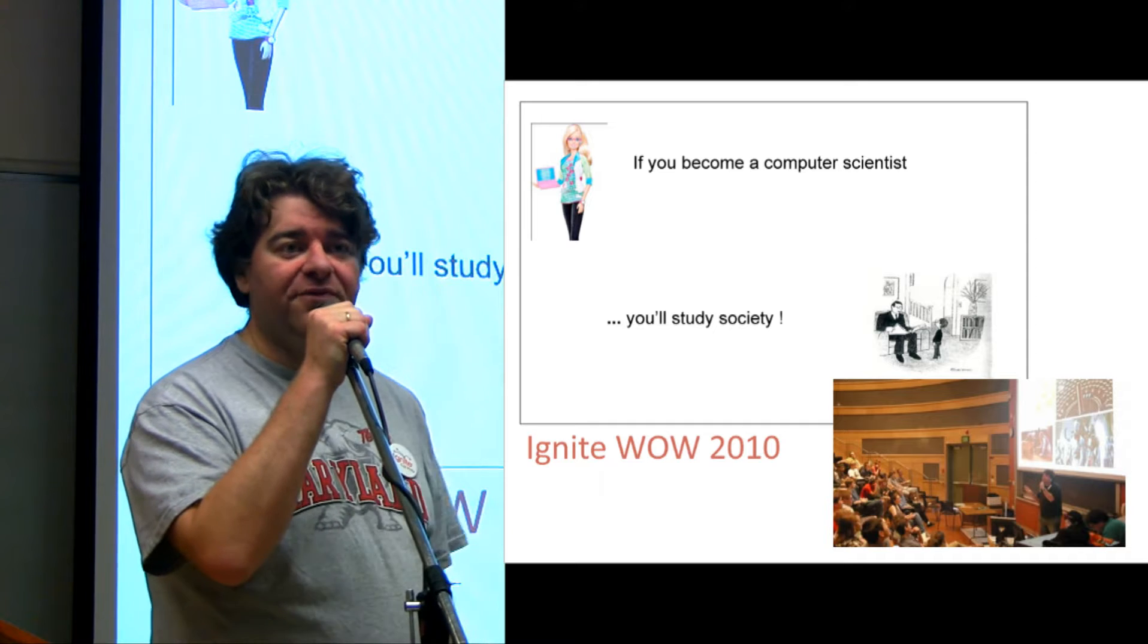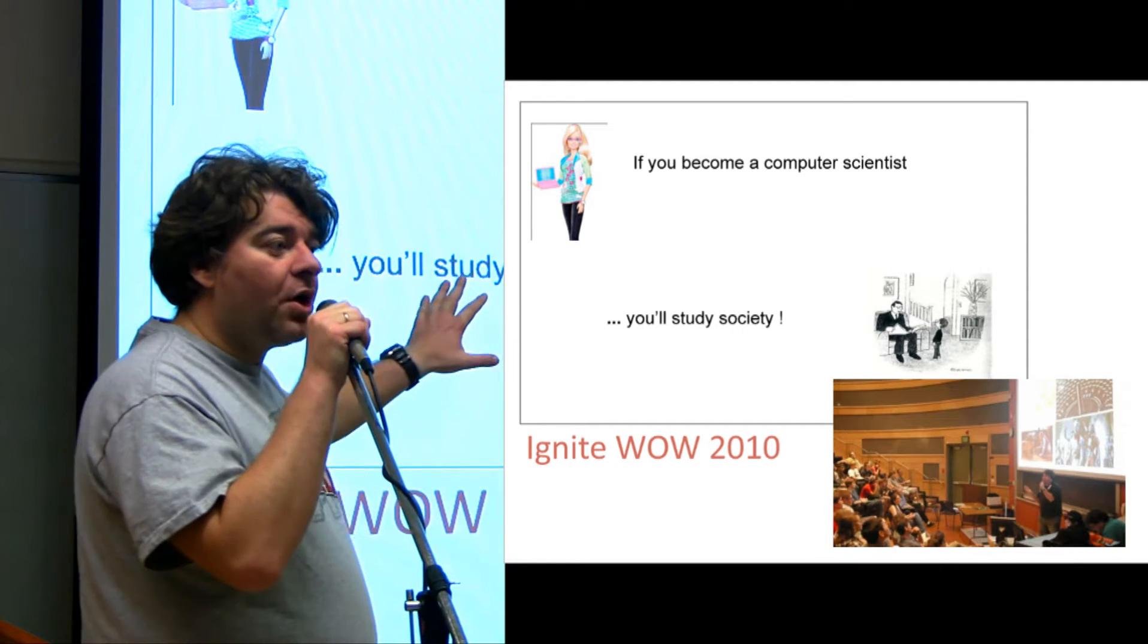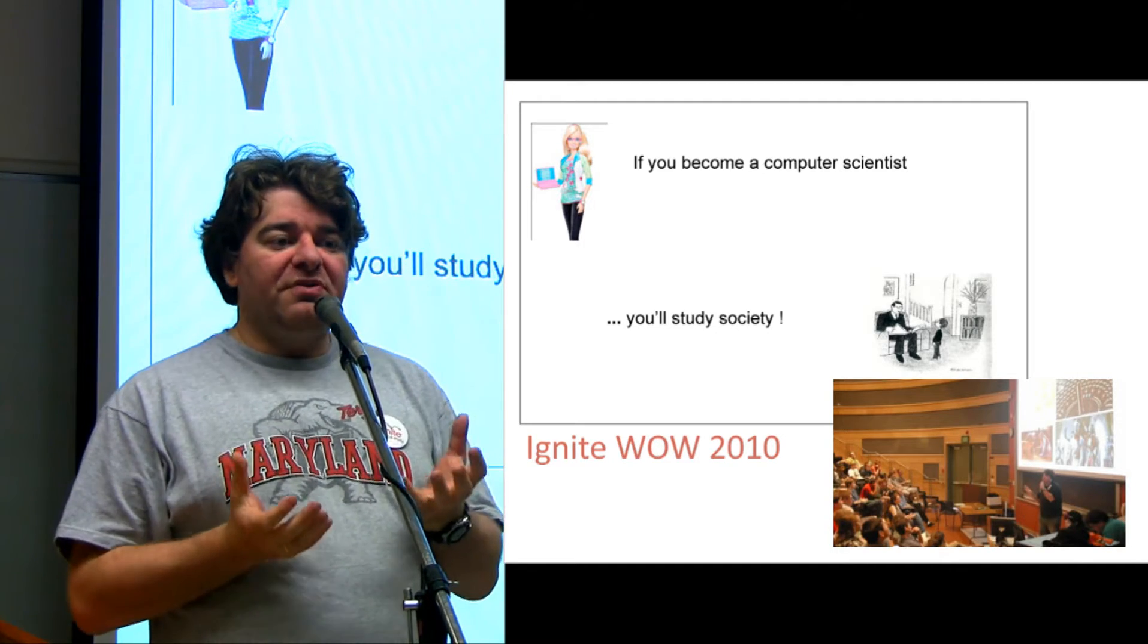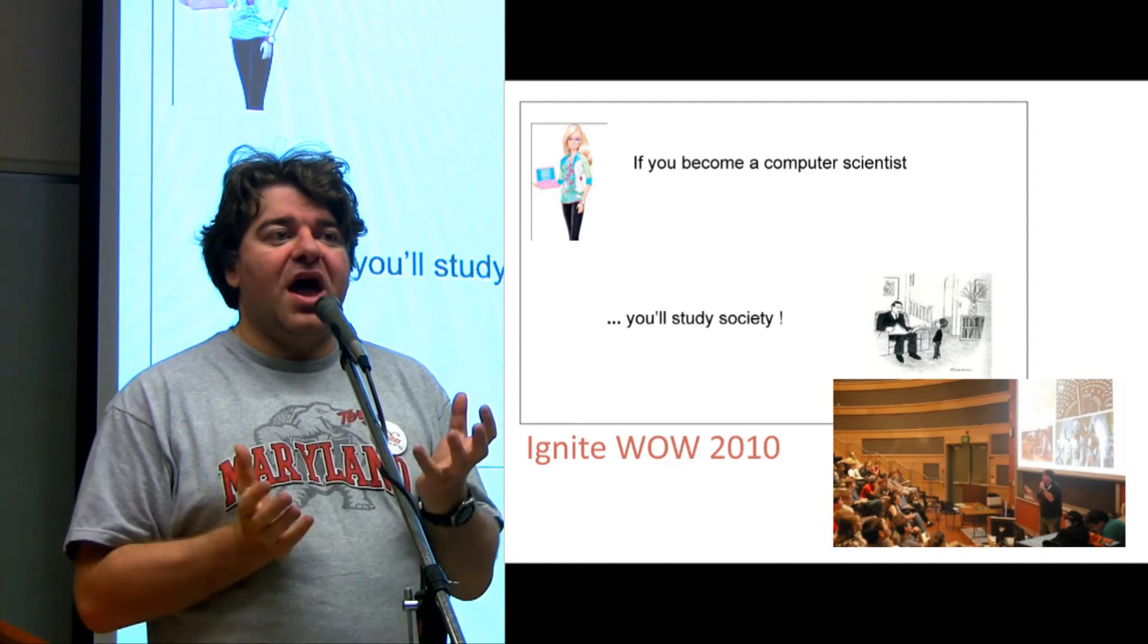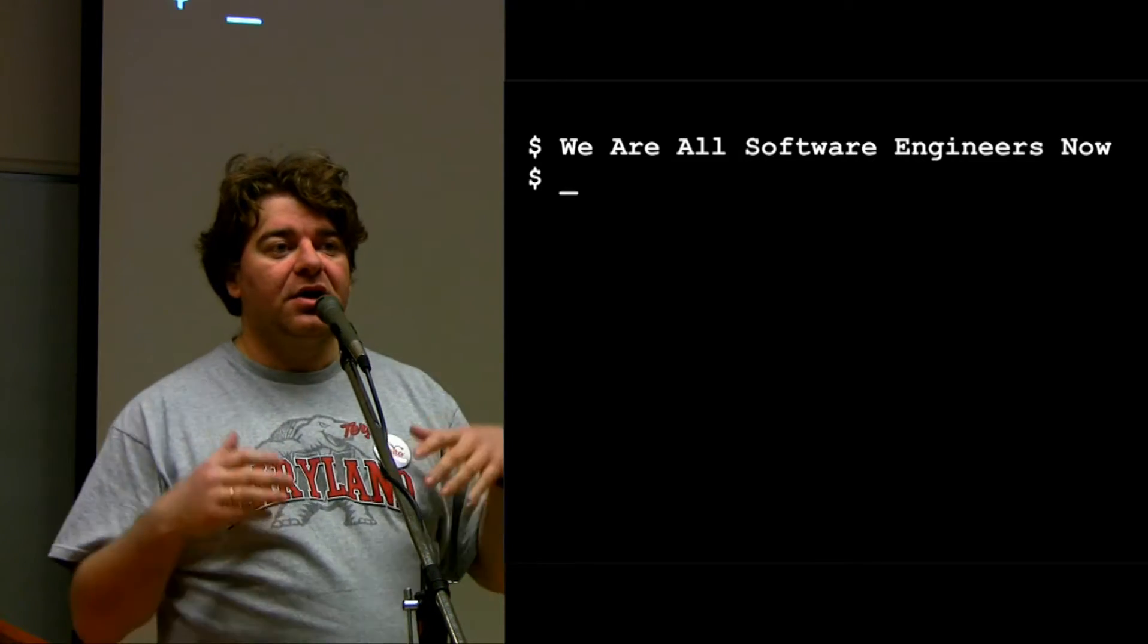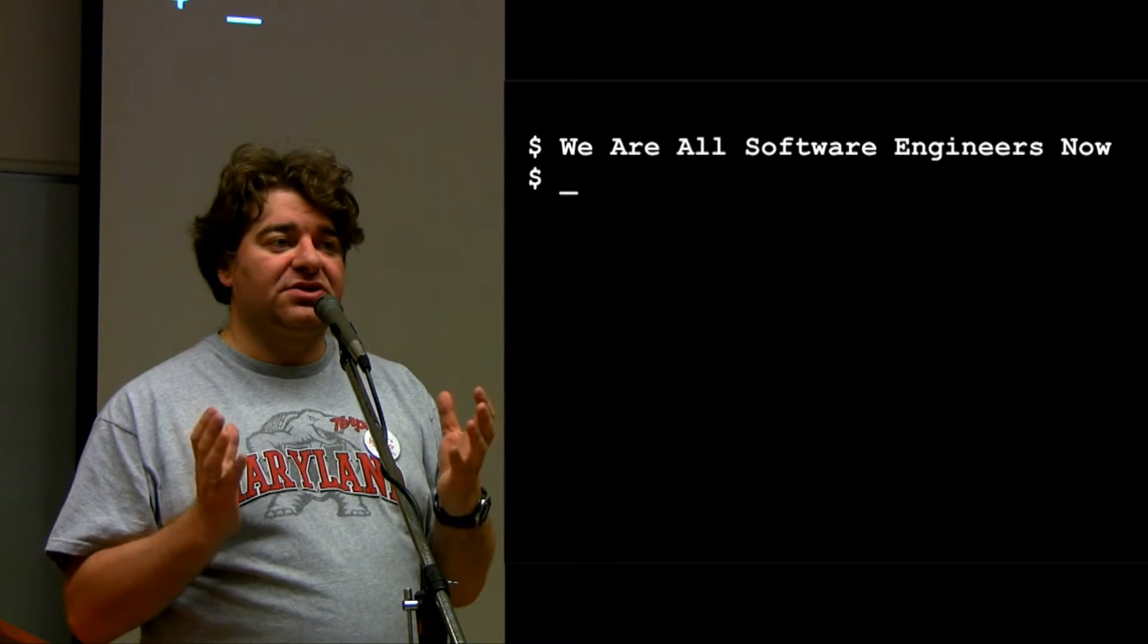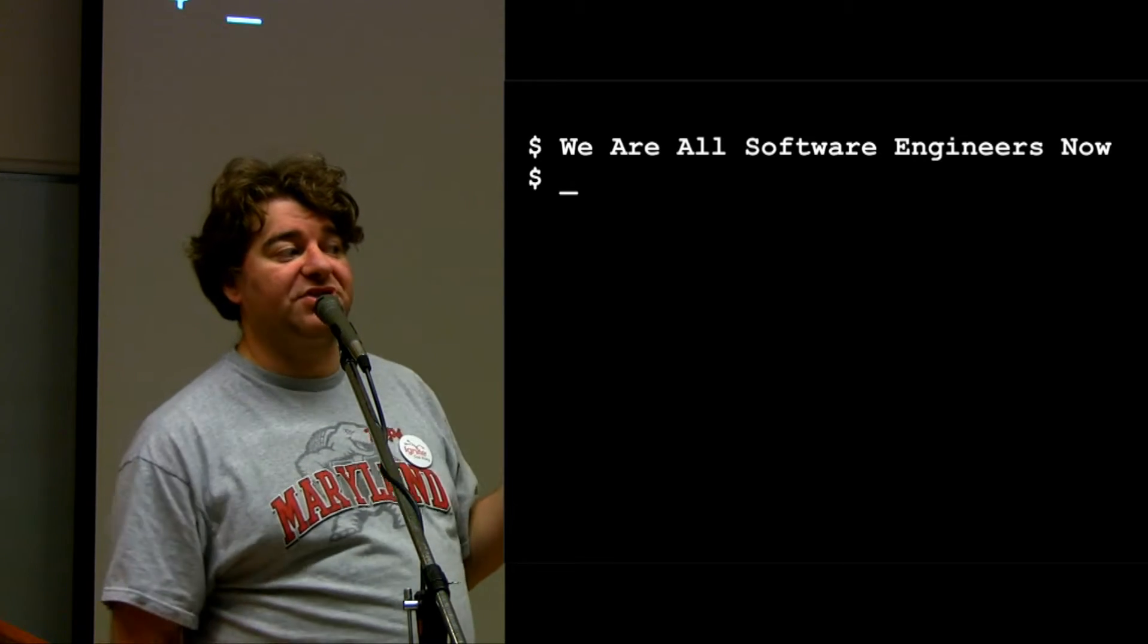About a year and a half ago, at our first Ignite event, I gave a talk that basically had been driven by a point that almost everything you might want to do, you might want to do as a computer scientist. Computer science goes beyond the traditional mathematics, engineering, and science directions these days, and you can study almost everything.